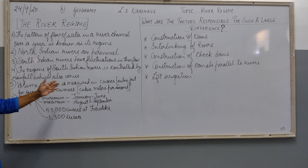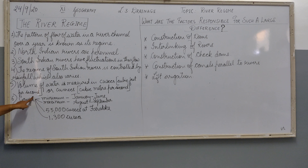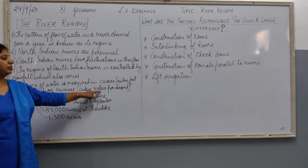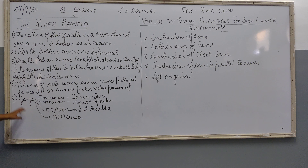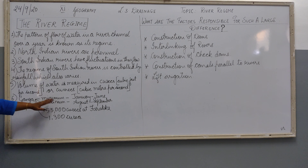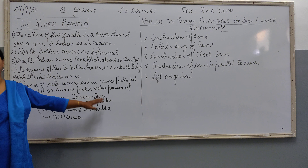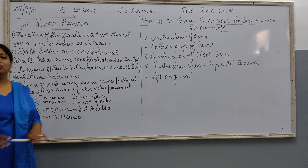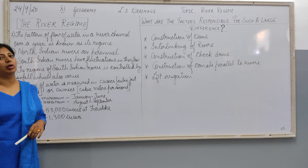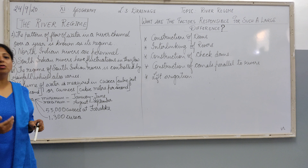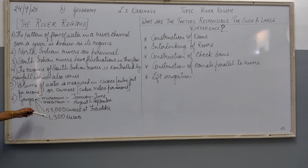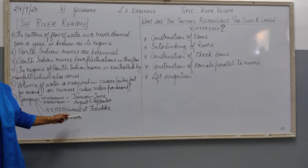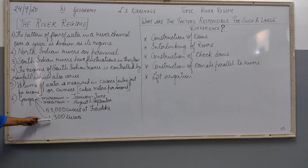Volume of water is measured in cusecs — that is cubic feet per second — or cumecs, cubic meters per second. For the river Ganga, the minimum flow is in January and June. The maximum flow is in August and September because after the rains the volume of water increases and the glaciers have also melted. At its peak it has 55,000 cusecs, and the minimum is 1,300 cusecs.